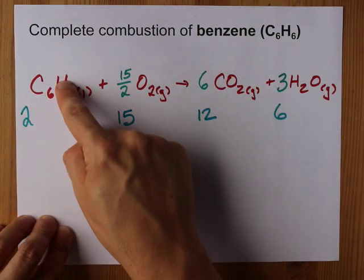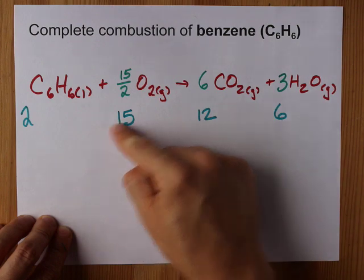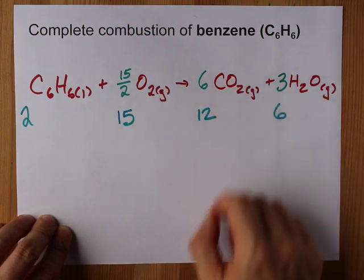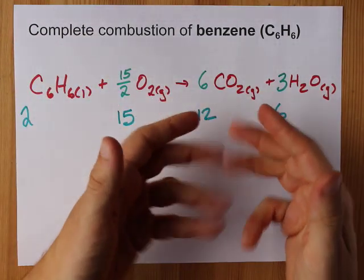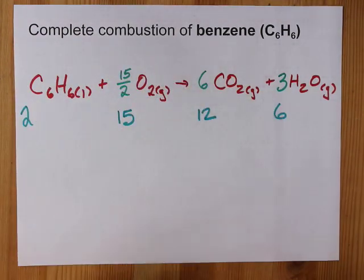Your complete combustion is two benzenes and 15 O2s makes 12 carbon dioxide and 6 waters. It's complete, because you don't have other byproducts like carbon monoxide or soot.